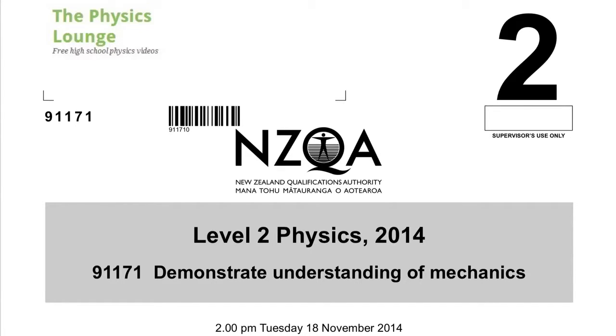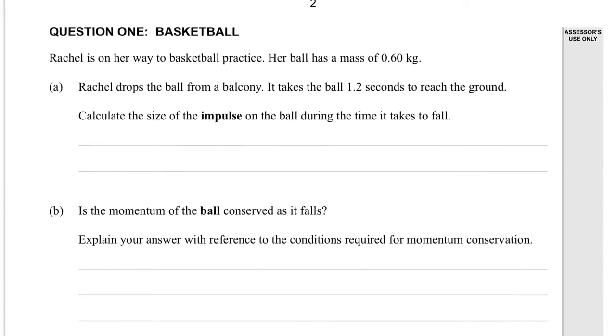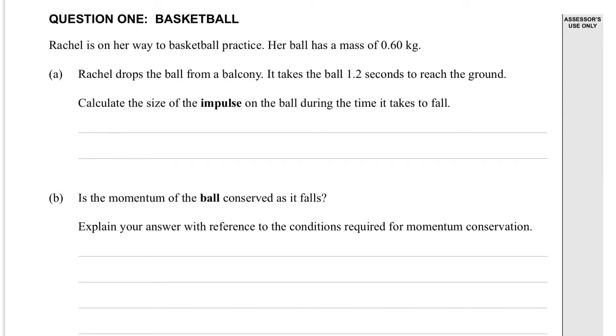This is the 2014 Mechanics Level 2 paper, question number 1. We have basketball. Rachel is on her way to basketball practice. Her ball has a mass of 0.60 kilograms, that's 600 grams. Rachel drops the ball from a balcony.